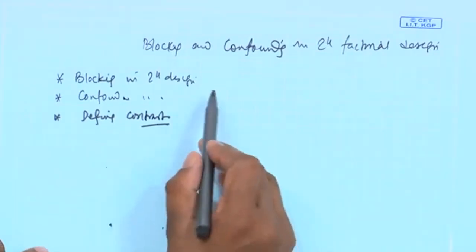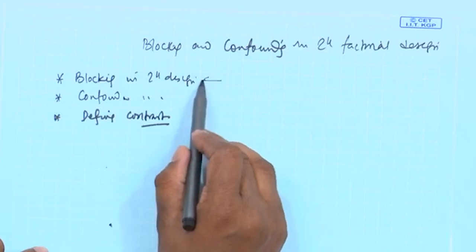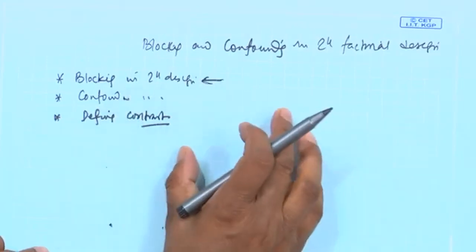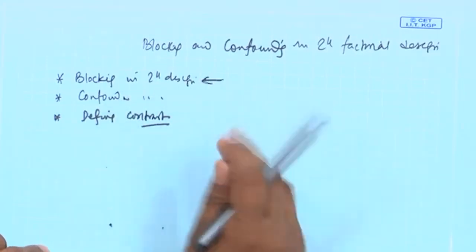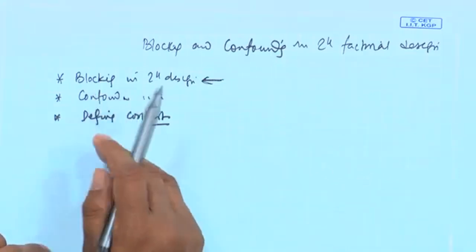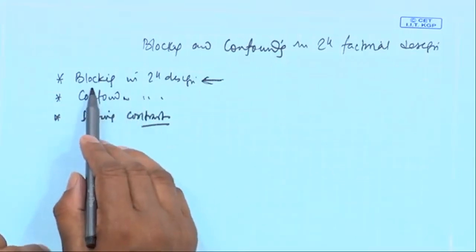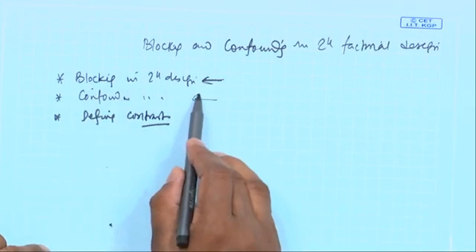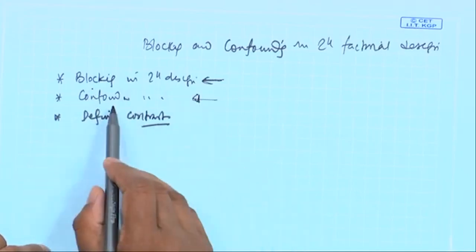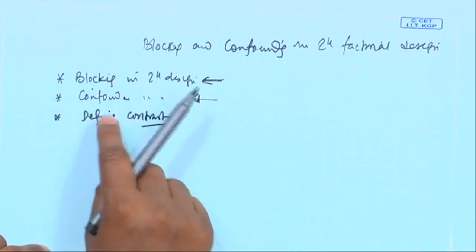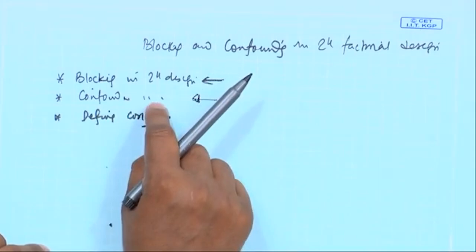What we have seen basically is that in the first case, blocks are used as replicates, and every block is able to accommodate all the treatment combinations. In the case of confounding, every block is not able to accommodate all the treatment combinations.